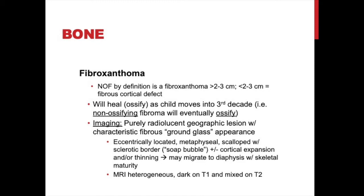On imaging you'll see a pure radiolucent lesion with a fibrous ground-glass appearance, eccentrically located and usually metaphyseal, with scalloped cortices and a nice sclerotic border indicating the bone has walled it off. The classic description is a soap bubble appearance in the cortex, usually with cortical expansion or thinning. As the child grows it may migrate from metaphysis toward the diaphysis. MRI will be heterogeneous with dark signal on T1 and mixed dark signal on T2 hinting at the fibrous component. CT is generally not recommended unless looking for a subtle pathologic fracture, as it tends to make this look more aggressive than it actually is.